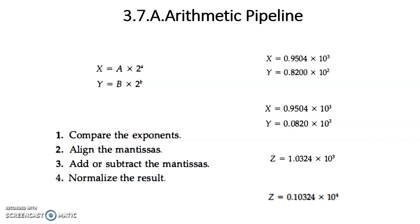So what is this arithmetic pipeline? Pipeline is a technique of decomposing a sequential process into sub-operations and executing those sub-operations in dedicated segments concurrently to increase the speed of the process. With the help of this pipeline technique, we can increase the speed of execution k number of times, where k is the number of segments. This pipeline concept is applied for arithmetic operations.